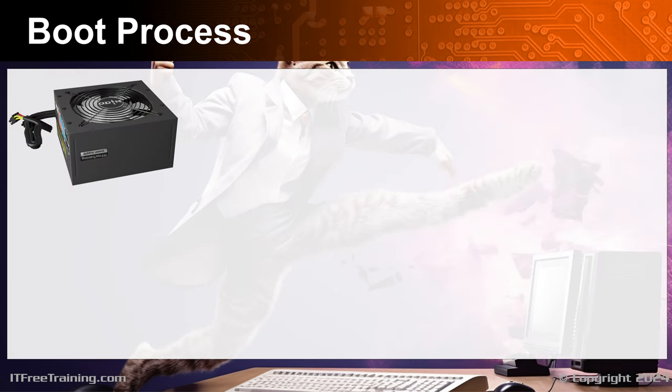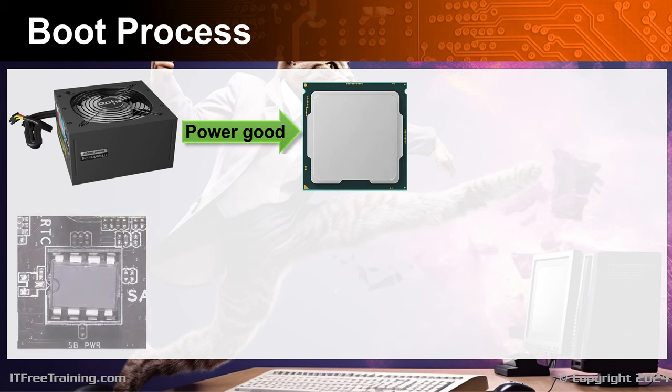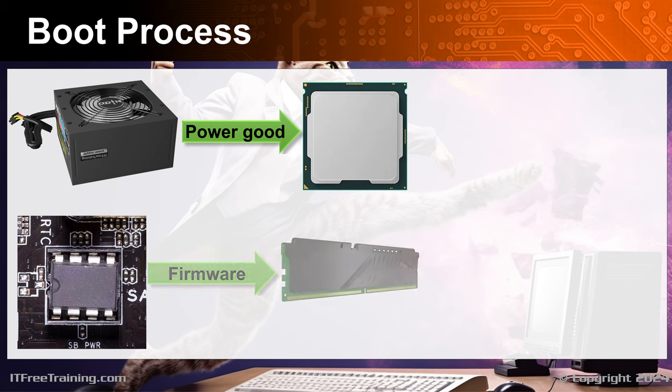Initially, the power supply sends a power good signal to the CPU, effectively resetting the CPU and other hardware and preparing them for operation. For the computer to start functioning, the CPU needs some code to run. On the motherboard, there is a BIOS or UEFI chip, which contains some basic firmware to run the computer. This firmware is transferred to memory to be run by the CPU, so the CPU now has some code to run.